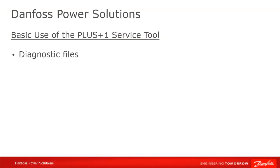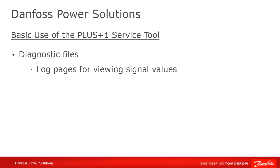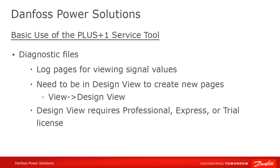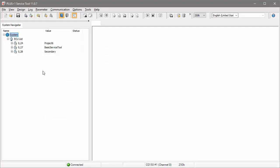After download, the service tool is also used to view what's going on in your program on the controller or display. You can do this on log pages. To create a log page, you first have to verify that you're in Design mode. Select Design Mode in the View menu. If it's grayed out, you might be using an unlicensed version of the service tool. You need an Express or Professional license for the service tool in order to create new pages.